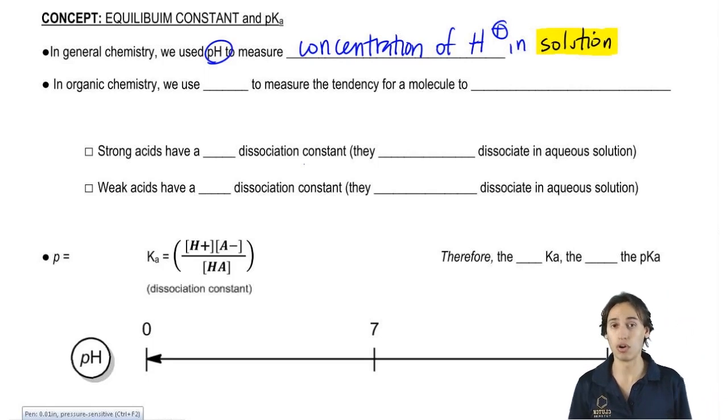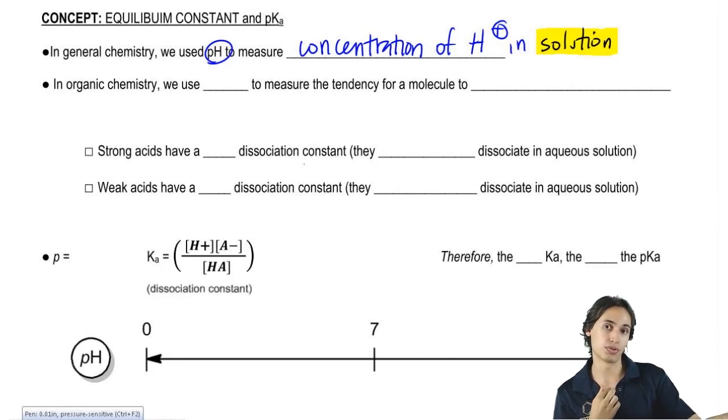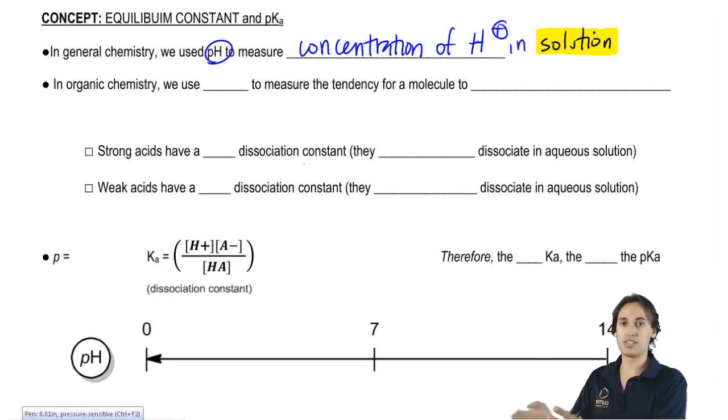But it turns out that in organic chemistry, we don't care about the solution at all - we don't care if it's acidic or basic. What we care about is the actual molecule itself and how likely that molecule is to donate a proton or accept a proton. pH doesn't tell me that.